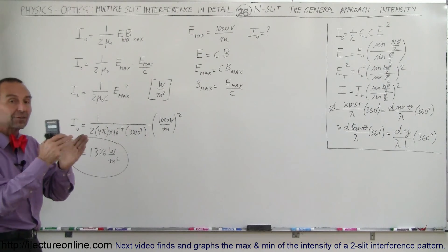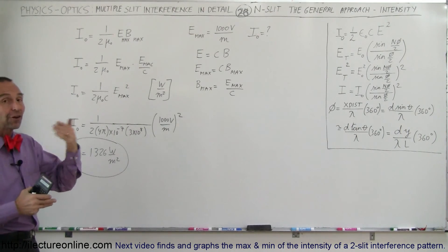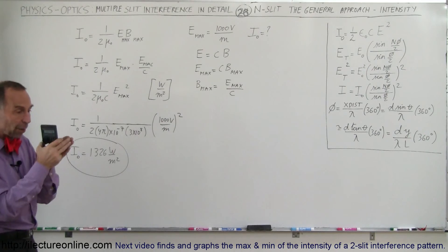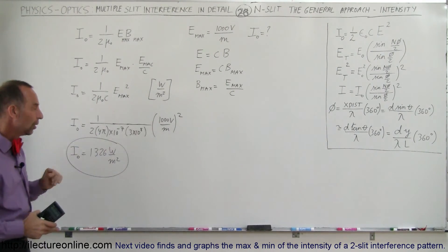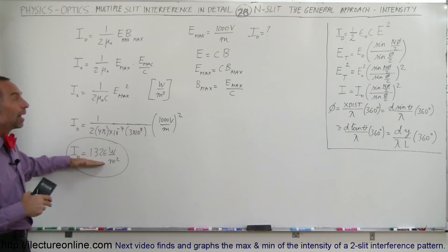And then when we go off away from the central maximum, it goes down to zero, and then we have our interference pattern. So now that we know how to find I sub nought, and we know how to find the intensity in terms of I sub nought anywhere, in terms of the phase angle, we're now going to study a little bit more about what that interference pattern looks like.